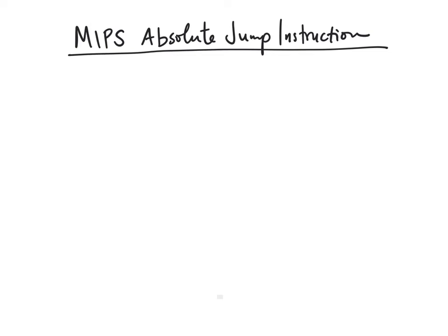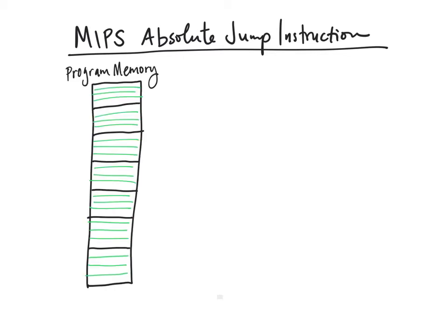This video is going to explain some details about the absolute jump instruction of the MIPS instruction set. Let's begin with the assumption that we have byte-addressed memory.